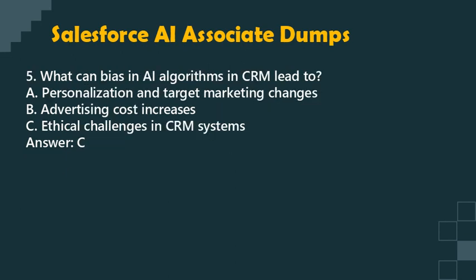Question 5: What can bias in AI algorithms in CRM lead to? a. Personalization and targeted marketing changes. b. Advertising cost increases. c. Ethical challenges in CRM systems. Answer: C.